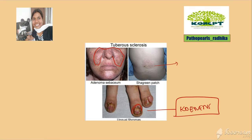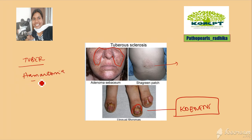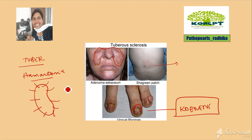Why is it called tuberous sclerosis? You see multiple tuber-like lesions in the brain. Tubers are vegetables that grow underground, like a potato. In the brain, you can see multiple hamartomatous lesions — a disorganized mass indigenous to that place. Imagine the ventricle with multiple lesions projecting into it. On CT brain, this gives a candle guttering appearance, which is seen in tuberous sclerosis.